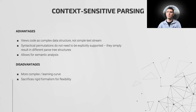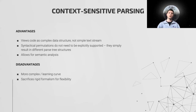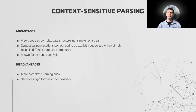Context-sensitive parsers are much more powerful and allow for structural and semantic analysis of code. To maximize flexibility, they treat code as a complex data structure instead of as a simple text stream. These structures are recursively self-consistent, allowing for easy traversal and an inherent ability to represent arbitrary permutations of syntactical elements. This is the strategy employed by most modern compilers. However, to achieve this flexibility, they require the use of many components operating in tandem, including a preprocessor, lexer, parser, and semantic analyzer, and they lack the rigid formalism of context-free grammars.